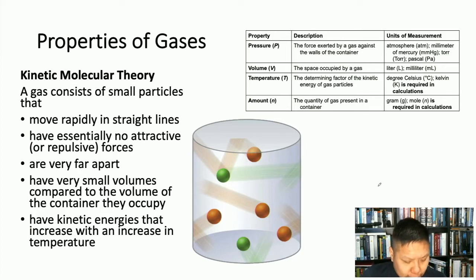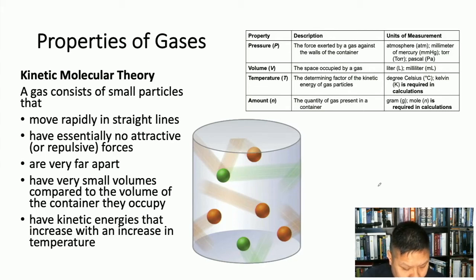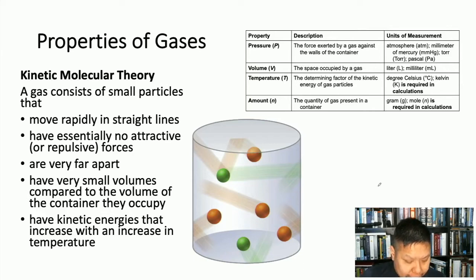The next property is volume — the space occupied by the gas, always measured in liters and milliliters, just like liquids. Temperature is also important; it determines the kinetic energy in the gas particles. In chemistry, we most commonly use the unit Kelvin, though sometimes Celsius is used. The amount, or number of moles of gas, is also an important property when studying gases.